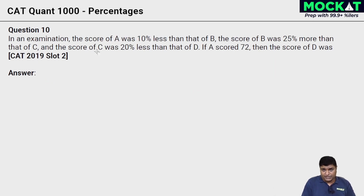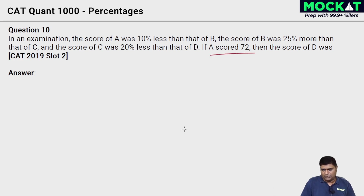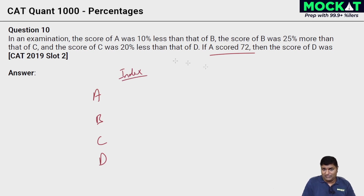Question 10. In an examination, the score of A was 10% less than that of B — A and B are linked, so if I know B I can find A. B was 25% more than C, so if I know C I can find B. C was something of D, so if I know D I can find C. It works backwards. But A's score of 72 is given, and I need to find D's score. The rest are all in percentage terms with one absolute value — we should use index here.